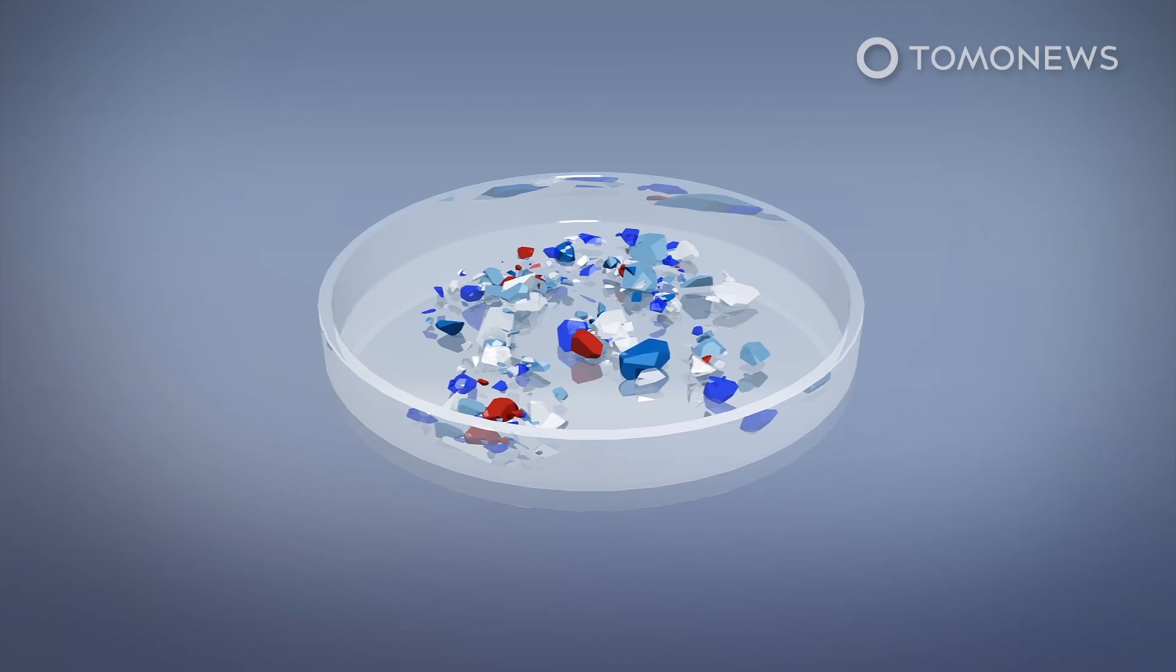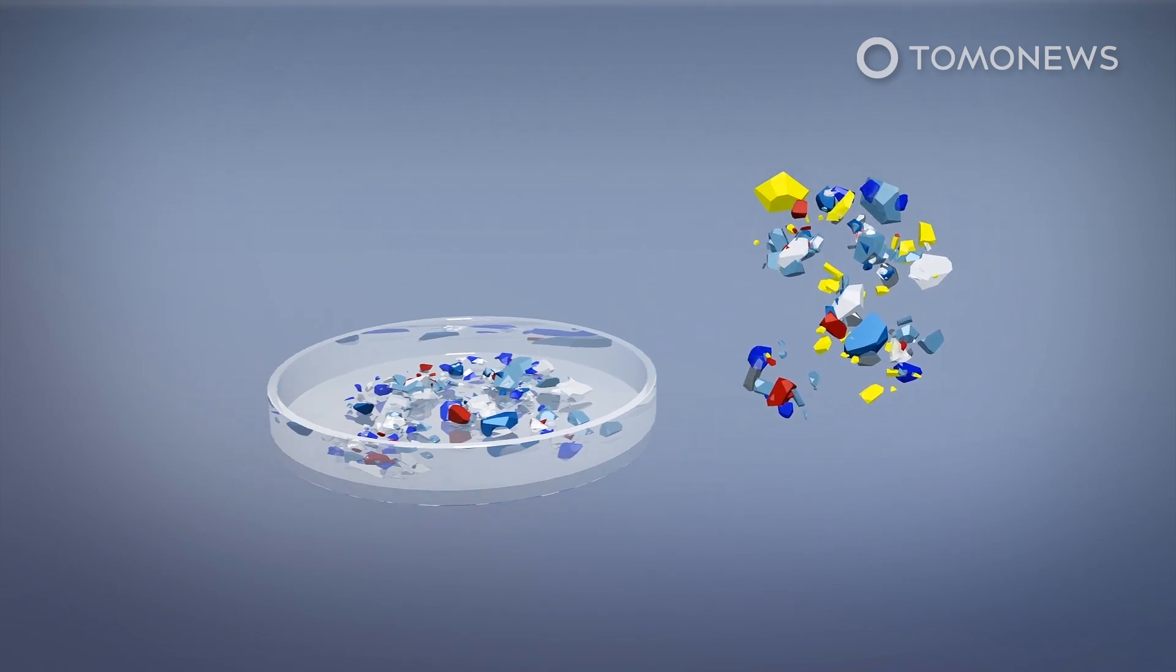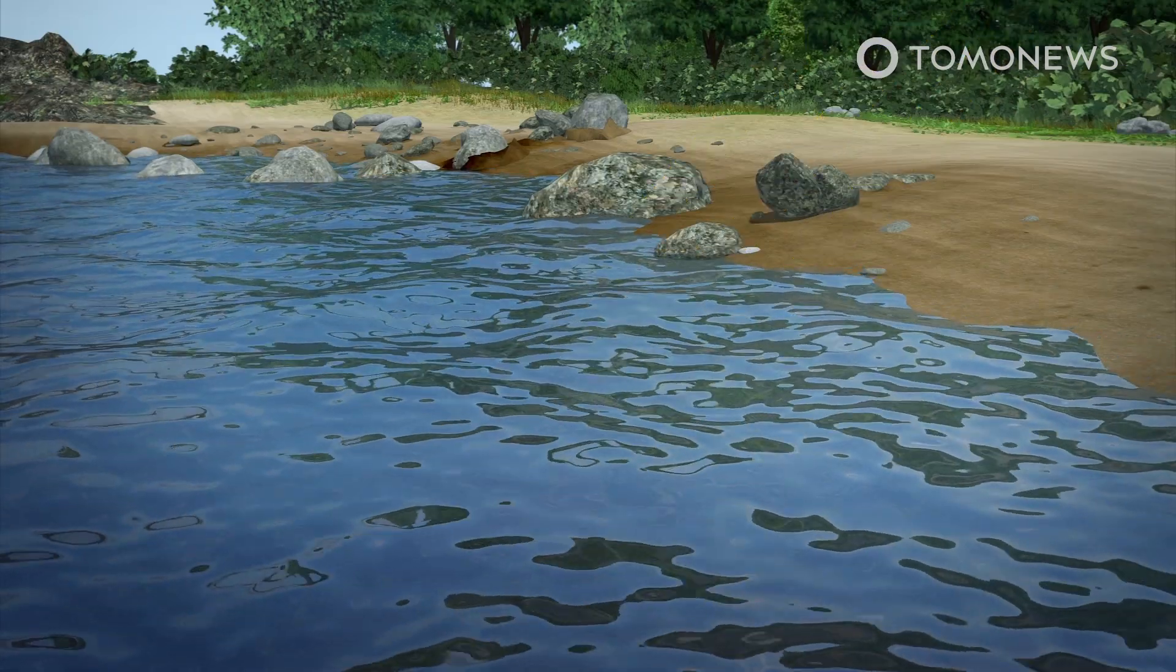The microplastic particles found were less than 5 mm in size and were mostly microbeads or secondary microplastics which are formed from larger plastic pieces due to exposure to sunlight.